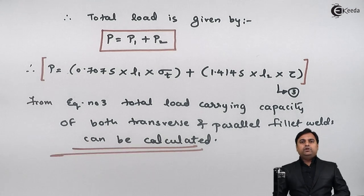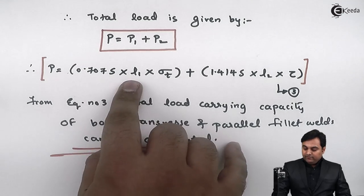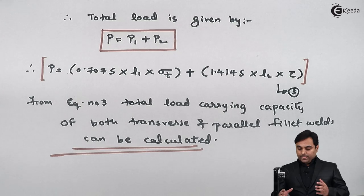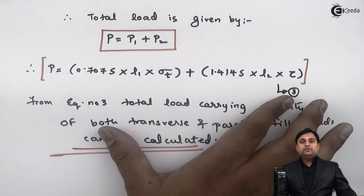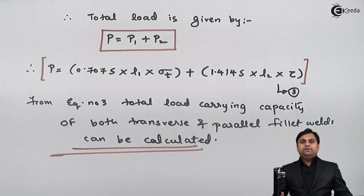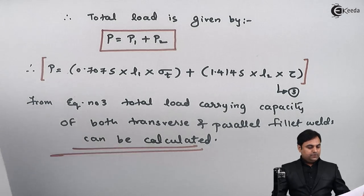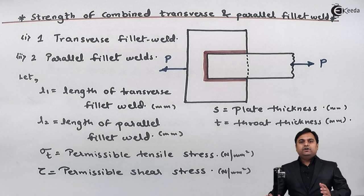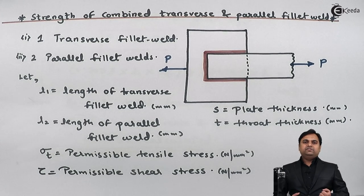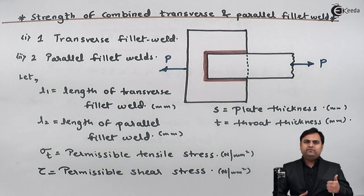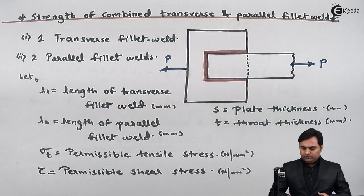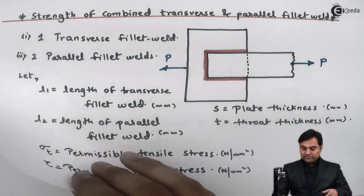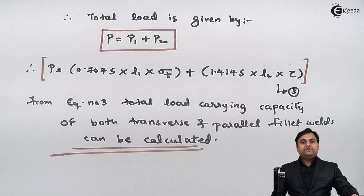If we know the value of the total load, we can use equation 3 to design the joint — that is, find the required length of each weld. So this equation gives us the design framework for welded joints. In this video we derived the strength for a single transverse fillet weld and a double parallel fillet weld, then combined them to get the final load-carrying capacity equation for the joint.